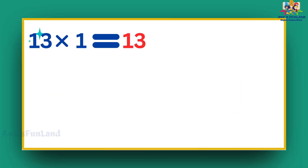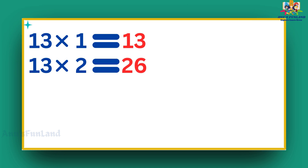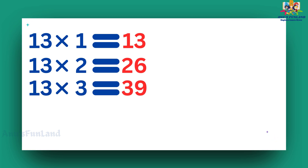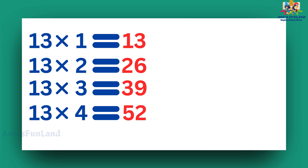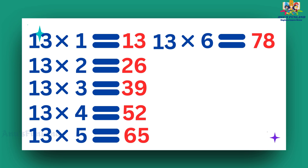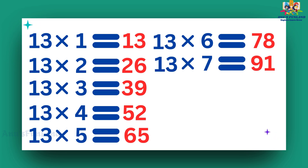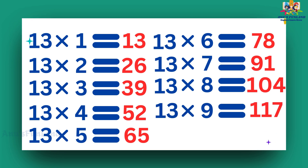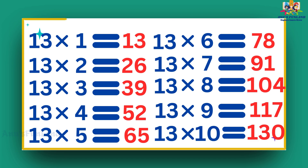13 ones are 13. 13 twos are 26. 13 threes are 39. 13 fours are 52. 13 fives are 65. 13 sixes are 78. 13 sevens are 91. 13 eights are 104. 13 nines are 117. 13 tens are 130.